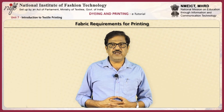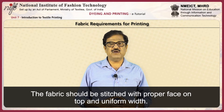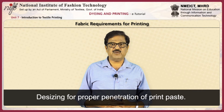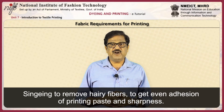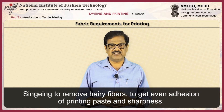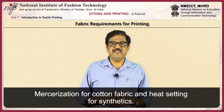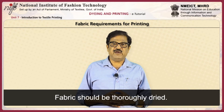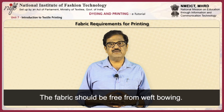For printing, the following are the general requirements of fabrics. The fabric should be stitched with proper face on top and uniform width. Shearing and cropping treatment is given to remove loose threads. Desizing is necessary for proper penetration of the print paste. Singeing removes hairy fibers to enable uniform adhesion of printing paste and sharpness. Scouring gives better dye absorption. Mercerization is given for cotton fabric and heat setting for synthetic fabrics. Full bleaching is suitable for a whiter background. The fabric should be thoroughly dried, free from creases, and free from weft bowing.